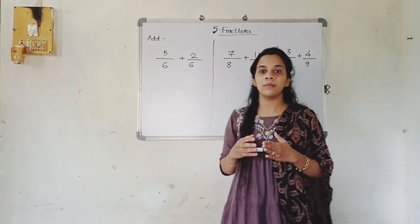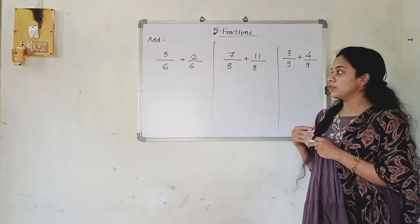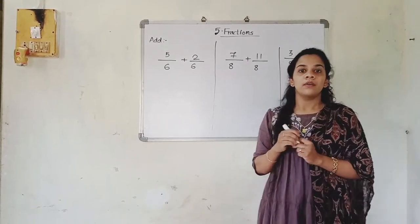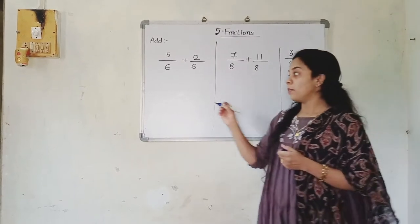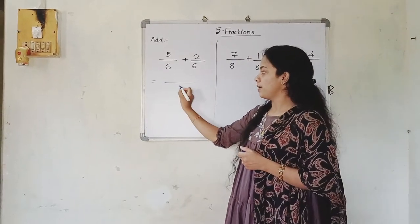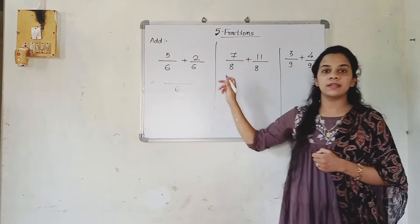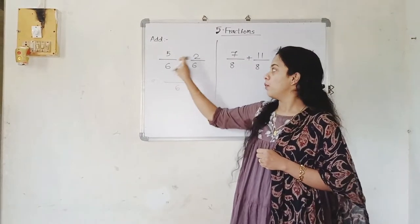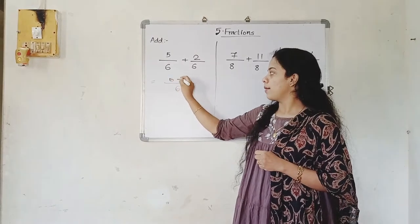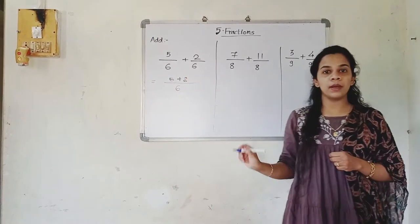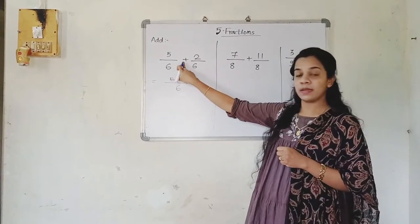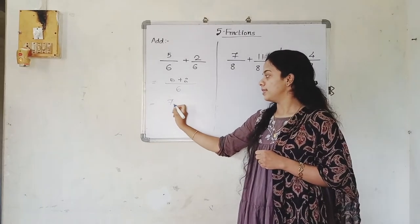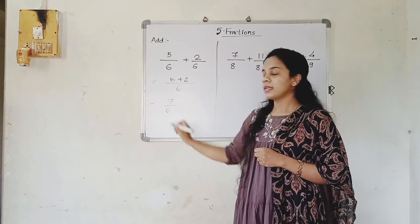We are going to add them — just look at the board. The first question is 5 upon 6 plus 2 upon 6. When the denominator is the same, we are going to take it one time. Here 6 is repeated twice, so we take it once and add the numerators: 5 plus 2. Why 5 plus 2? Because there is a plus sign in between. So 5 plus 2 is 7 and the denominator is 6.